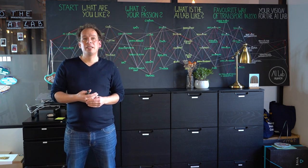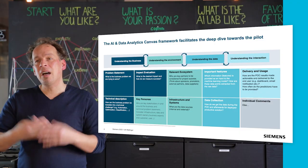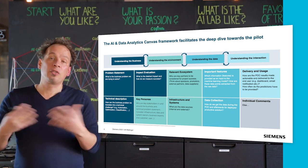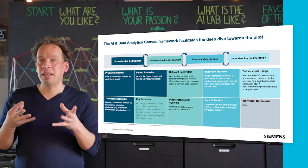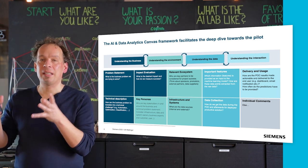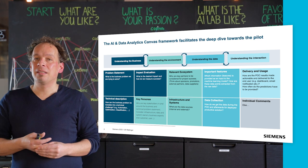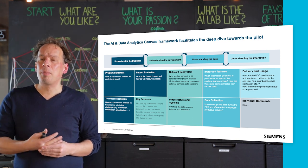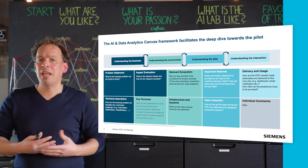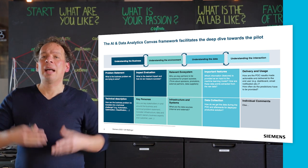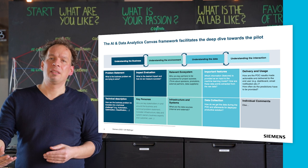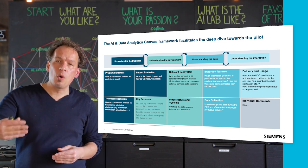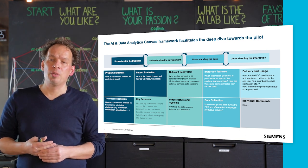The third framework I would like to introduce is the AI and Data Analytics Canvas, which is structured similarly to the value proposition canvas along four different dimensions: understanding the business, understanding the environment, understanding the data, and understanding the interaction. From understanding the business, it guides you with the structure of the problem statement — what kind of problem do you want to solve, what is that problem translated into technical aspects, is it a classification or automation challenge, and how do you measure success? What KPIs need to be reached for you to be successful?